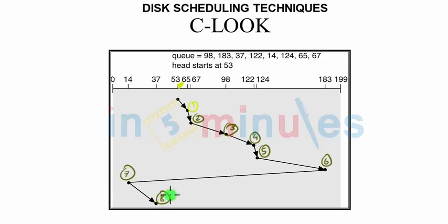So basically we are talking about moving through end number, but this time rather than going to extreme boundaries that is 0 and 199, we are stopping at extreme request, that is 14 and 183.